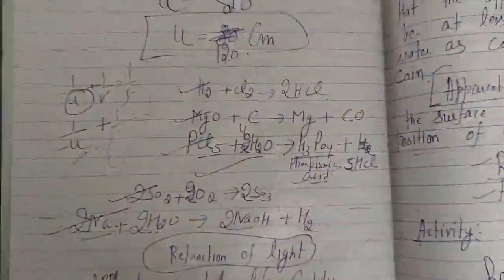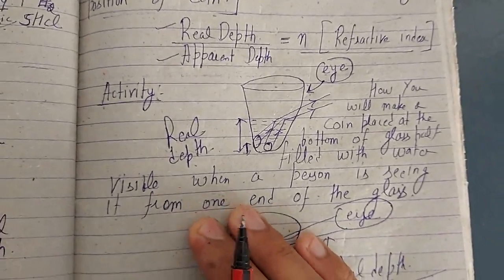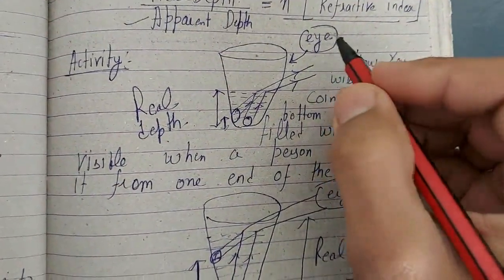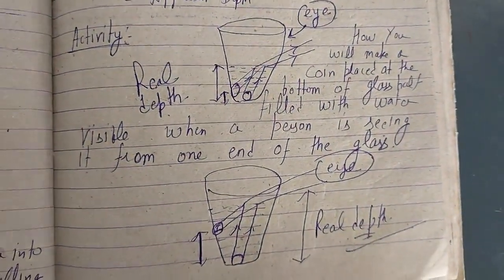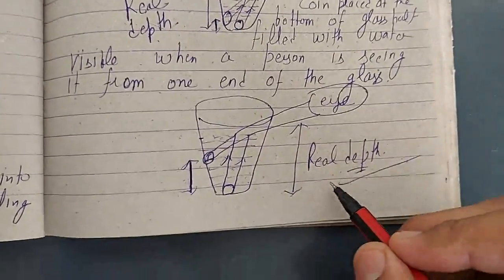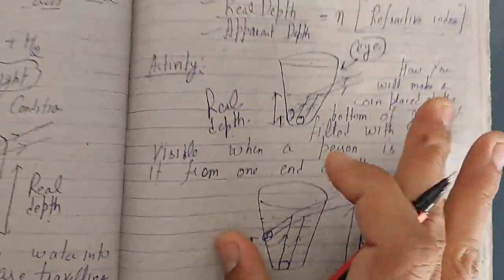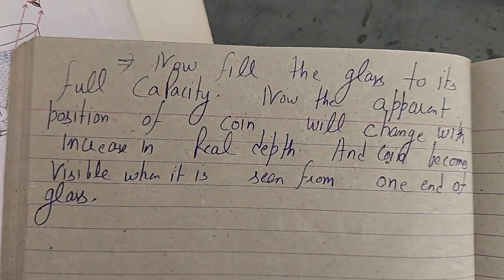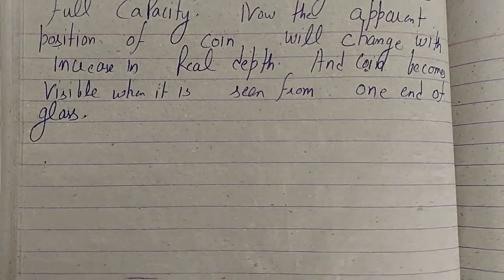So this activity shows how you will make a coin placed at the bottom of a glass half filled with water visible when it is seen from one end of the glass — you fill the glass up to its full capacity. With that, we will be able to see the coin from one end of the glass. With this, this topic is over and we will be meeting in the next lecture.